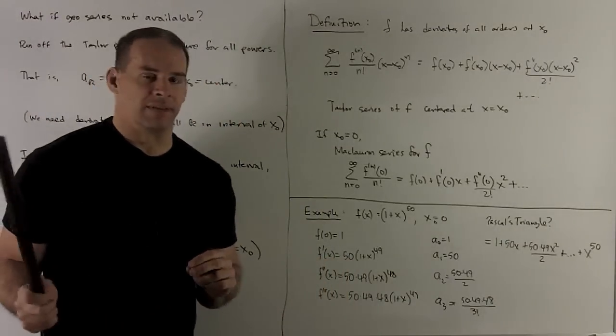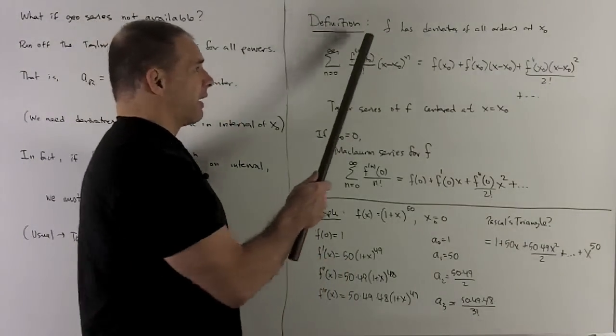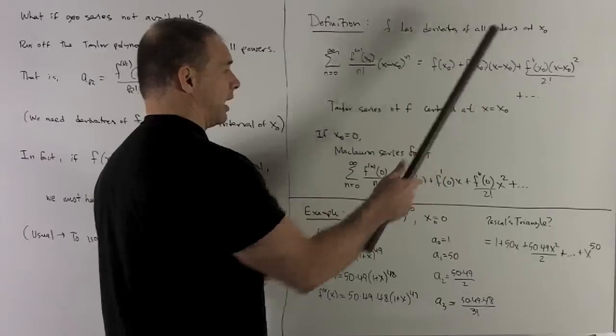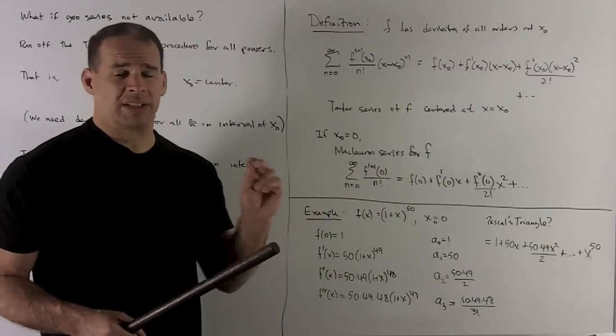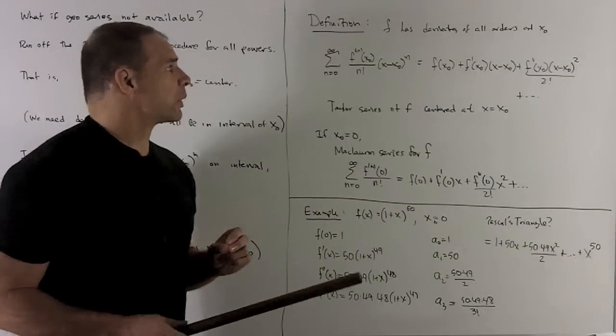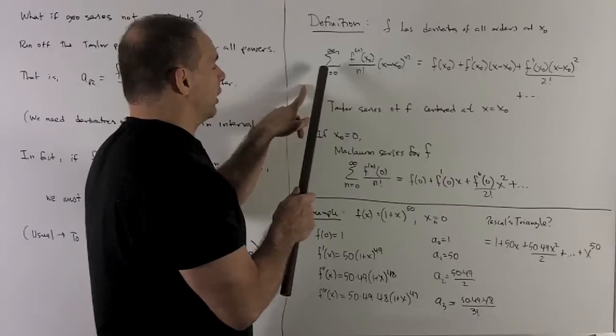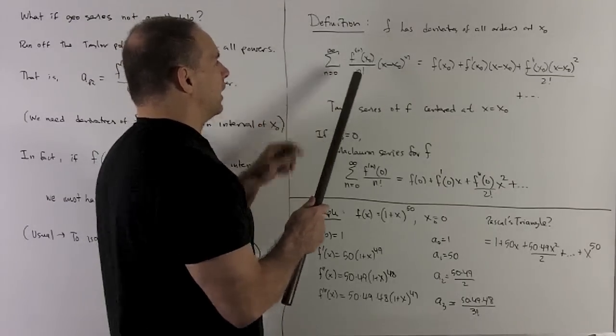Definition. f has derivatives of all orders at our point x zero, which means I can take as many derivatives as I want. We're going to define this gadget here, the series from zero to infinity,